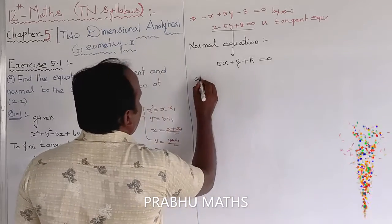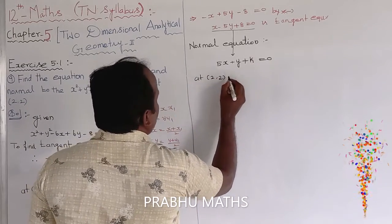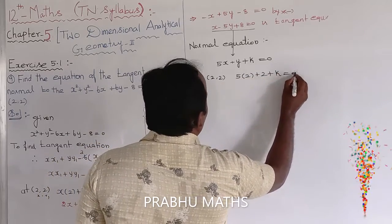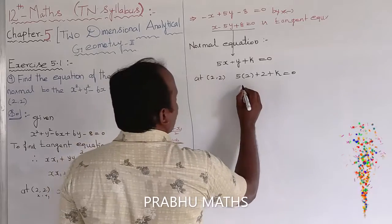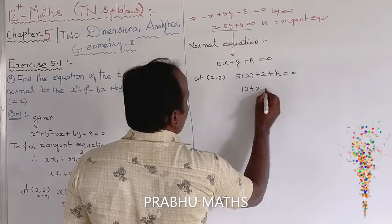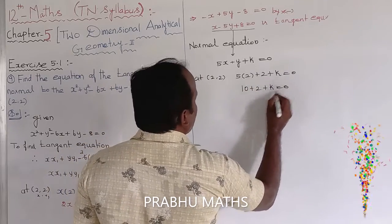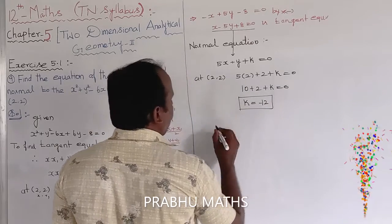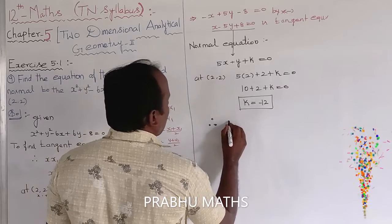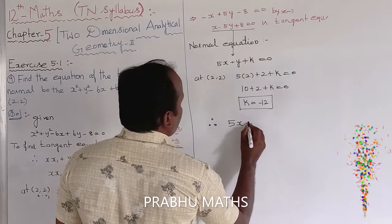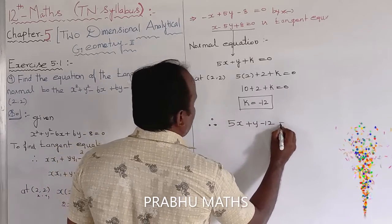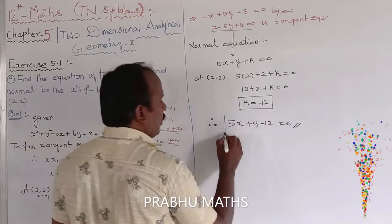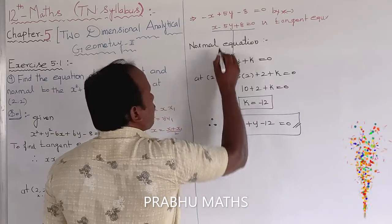Substituting the point (2, 2) to find k: 5(2) + 2 + k = 0, so 10 + 2 + k = 0, giving k = -12. Therefore, the normal equation is 5x + y - 12 = 0.